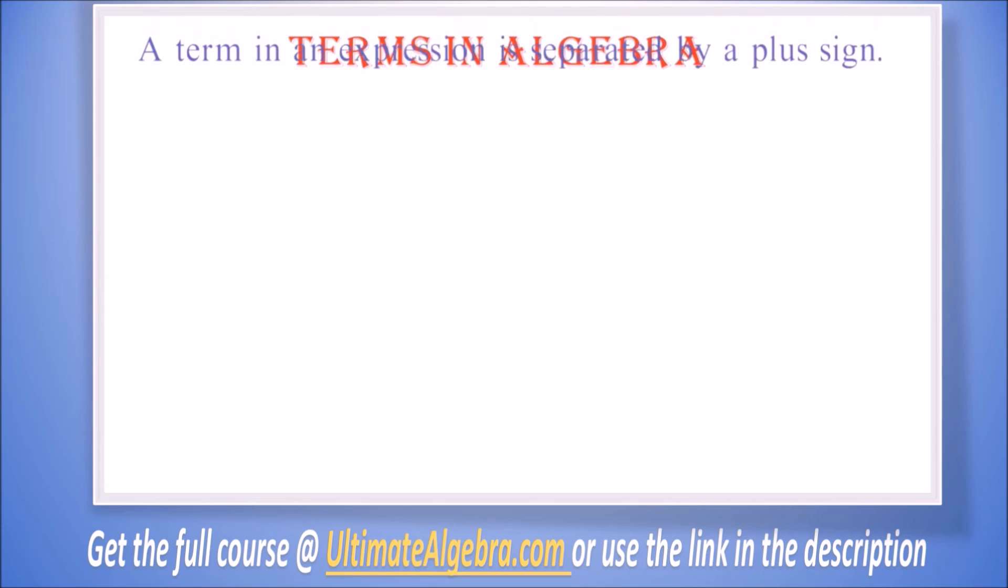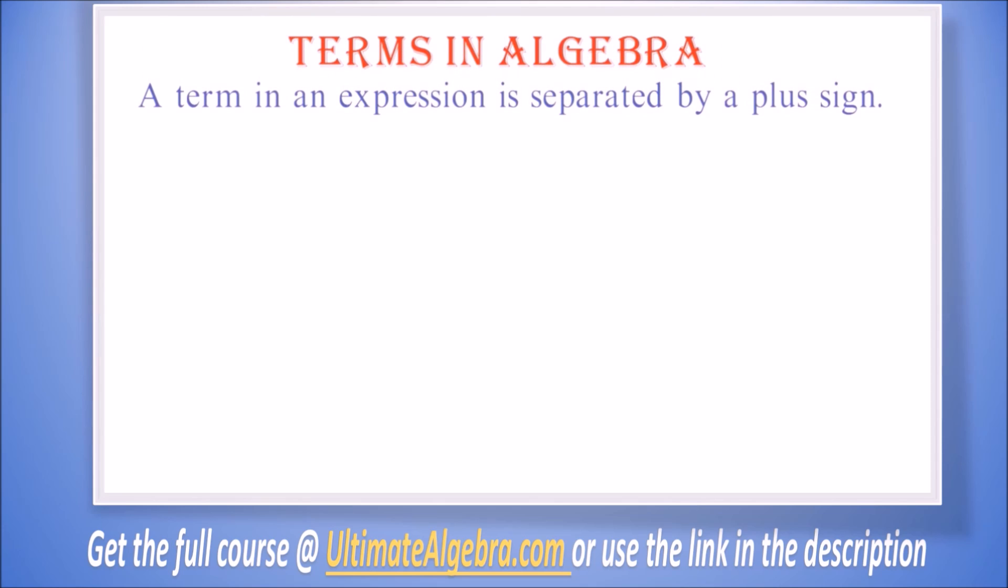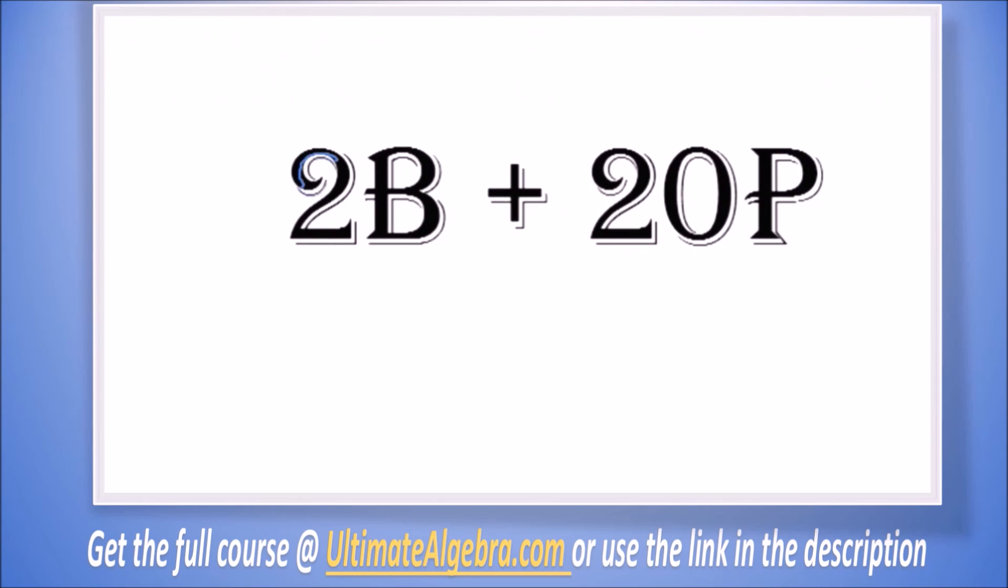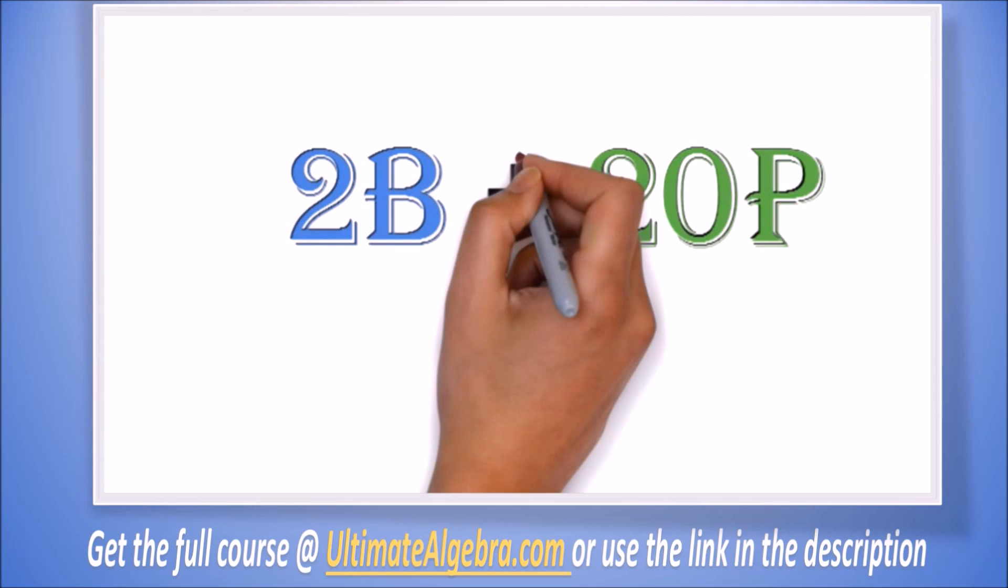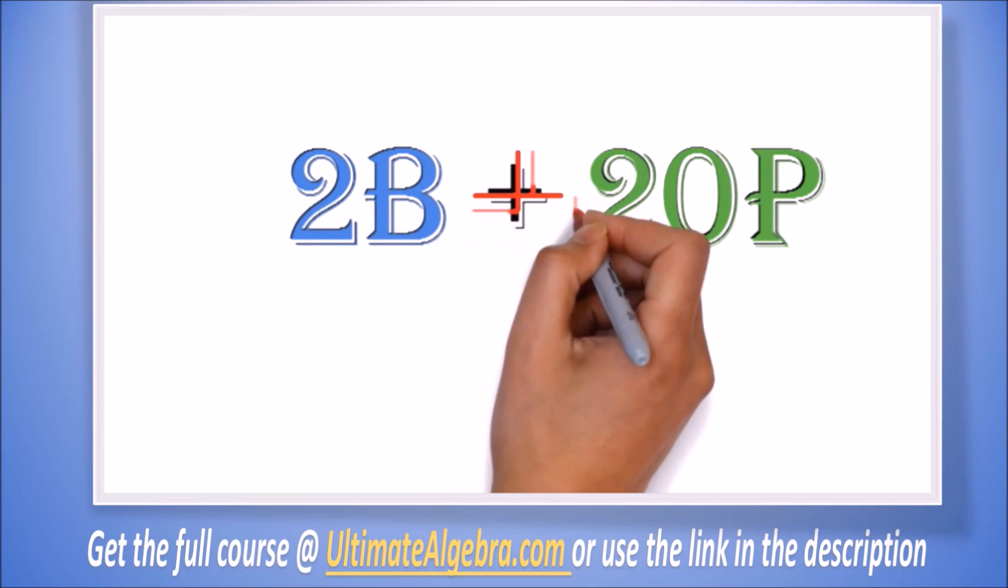What is a term in algebra? A term in an expression is separated by a plus sign. Example: 2b plus 20p has two terms, the 2b and 20p. Notice they are separated by a plus sign.